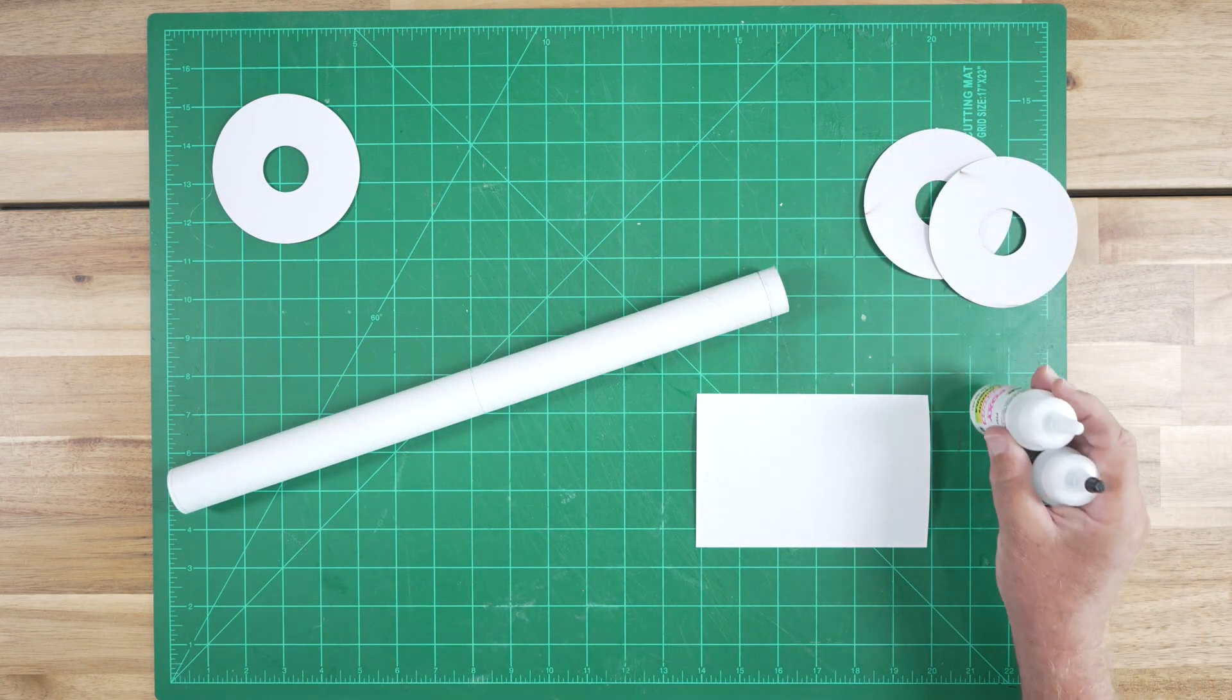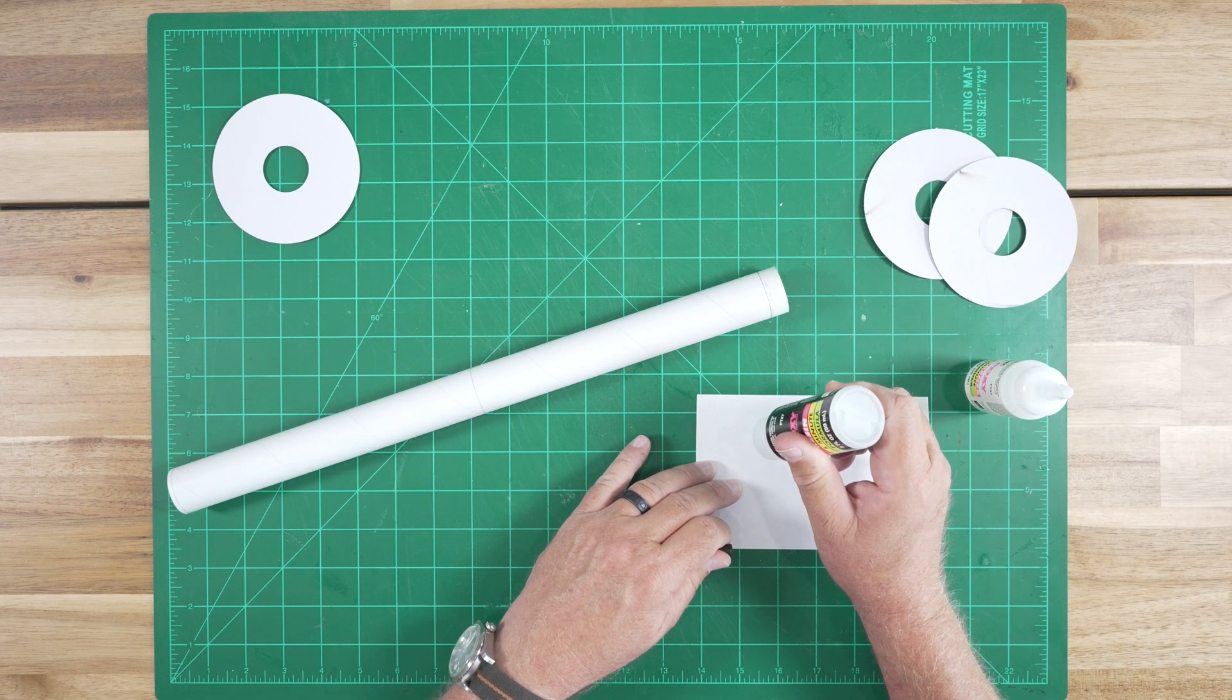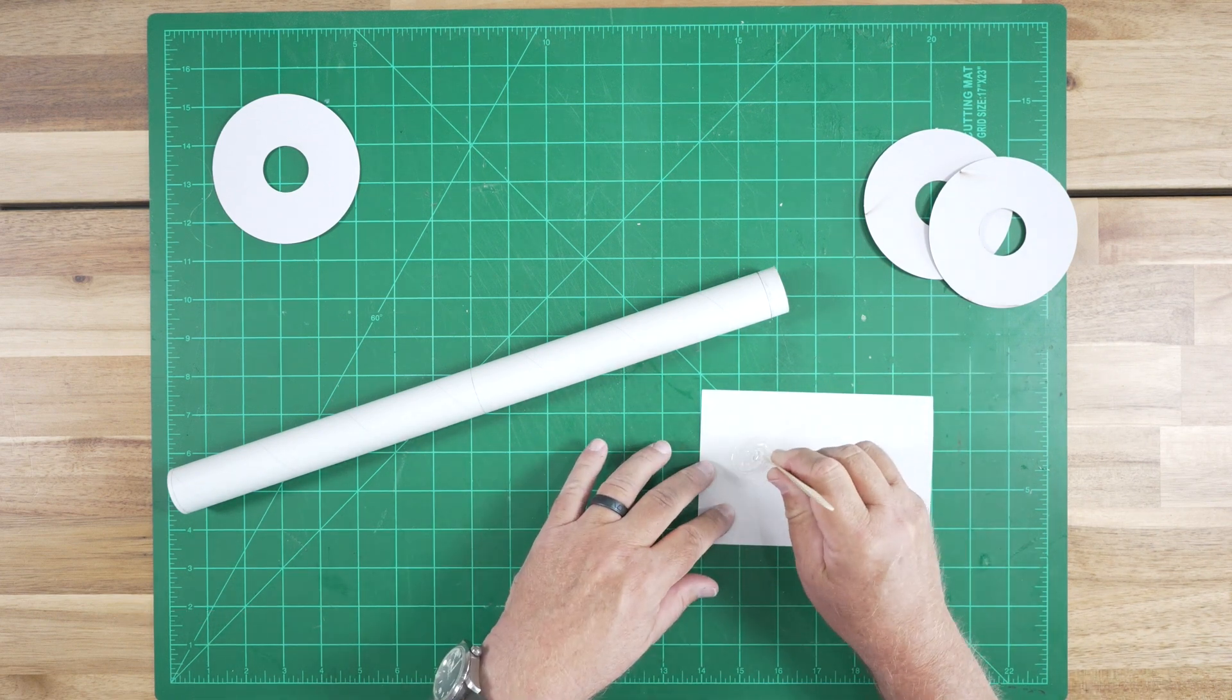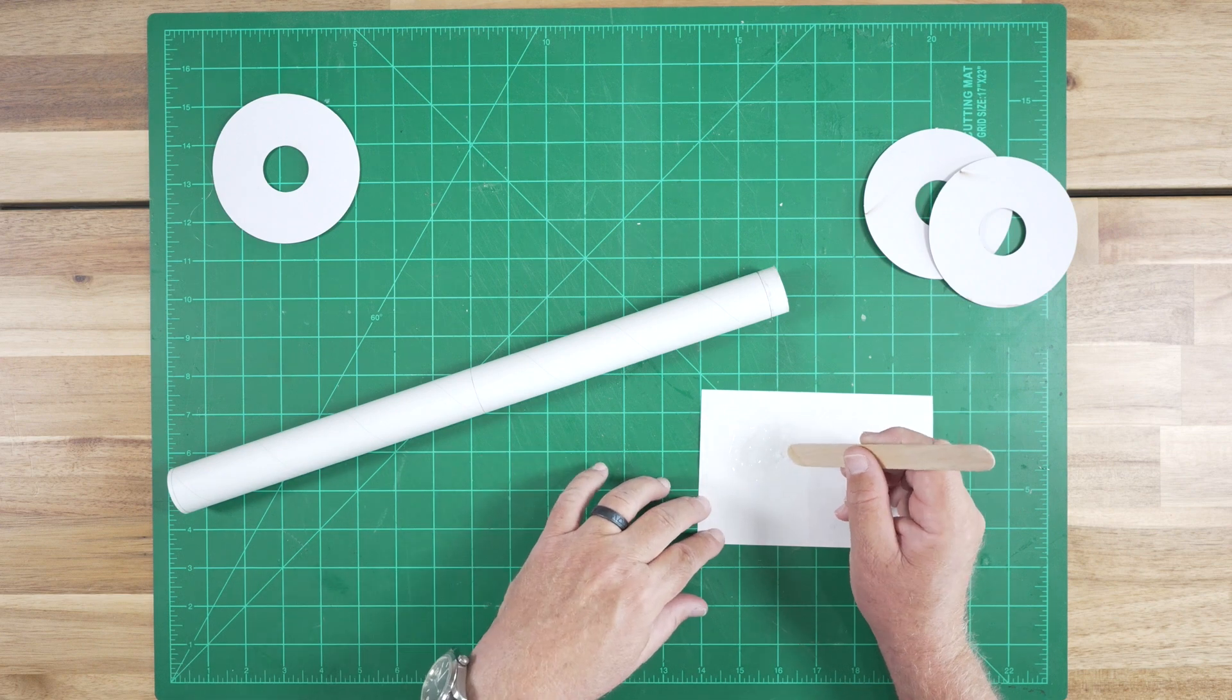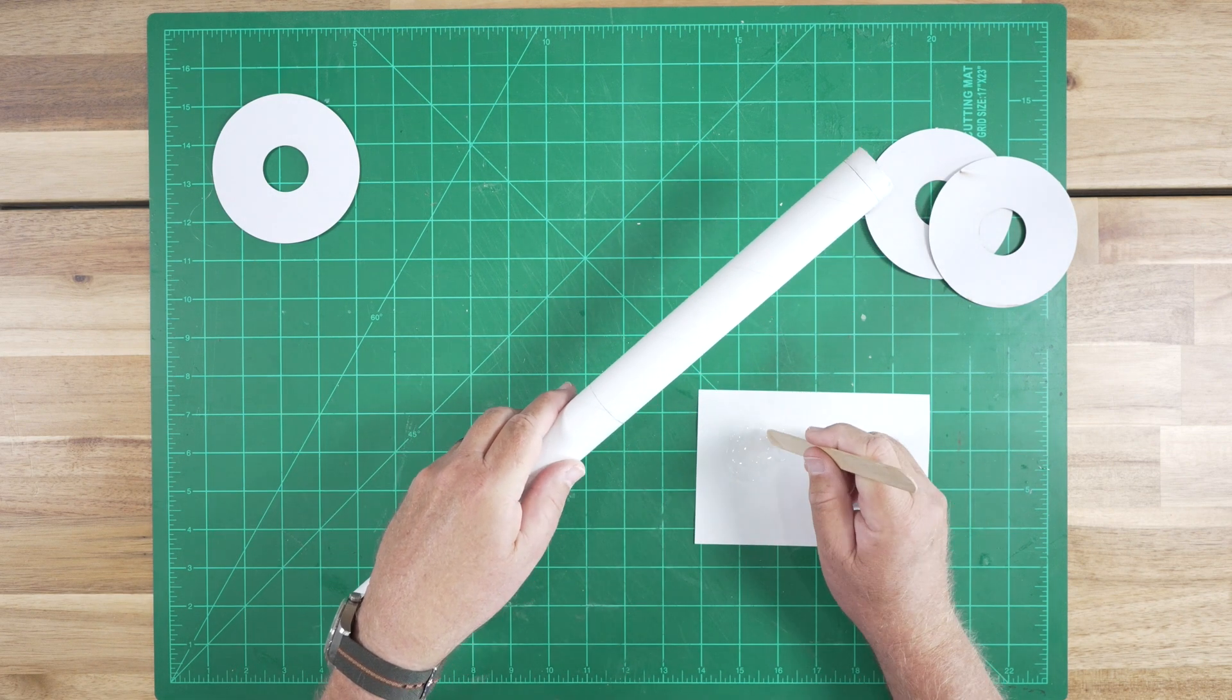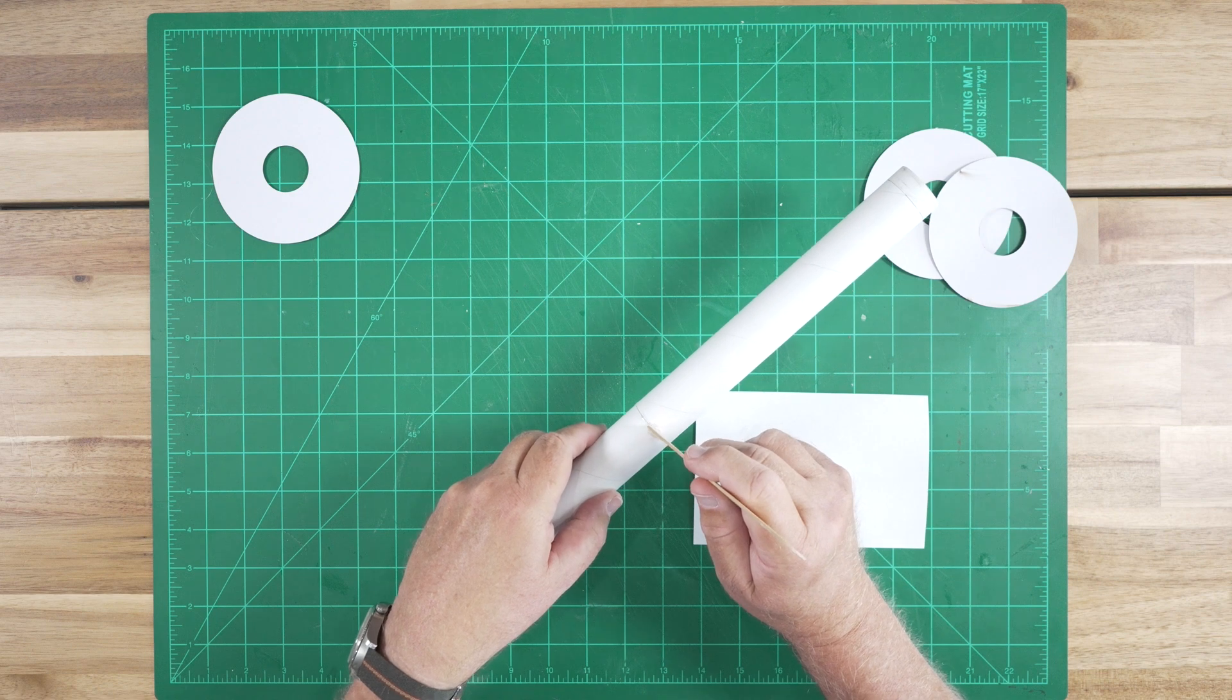We'll mix up some epoxy. I like to use index cards for this step. I can throw them away just after I do it. Mix that up with a tongue depressor or a popsicle stick. You can even use that to install the glue on the line we created. We're doing the middle ring first.